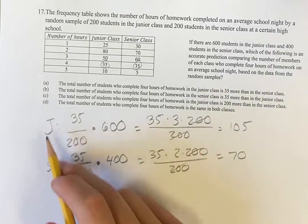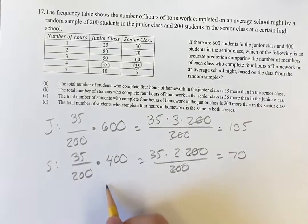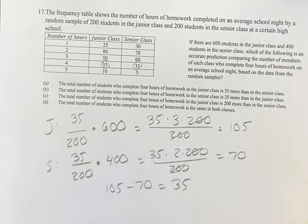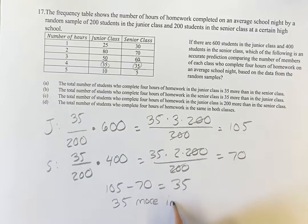So we're going to find the difference. We take the junior class and subtract the senior class, you get 105 minus 70 is equal to 35. So we're saying there's 35 more in the junior class.